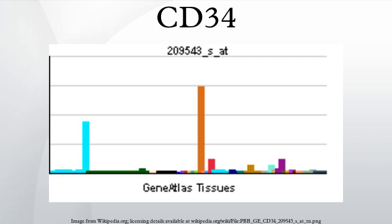CD34 is also expressed in cells in soft tissue tumors like DFSP, GIST, SFT, HPC, and to some degree in MPNSTs. The presence of CD34 on non-hematopoietic cells in various tissues has been linked to progenitor and adult stem cell phenotypes.